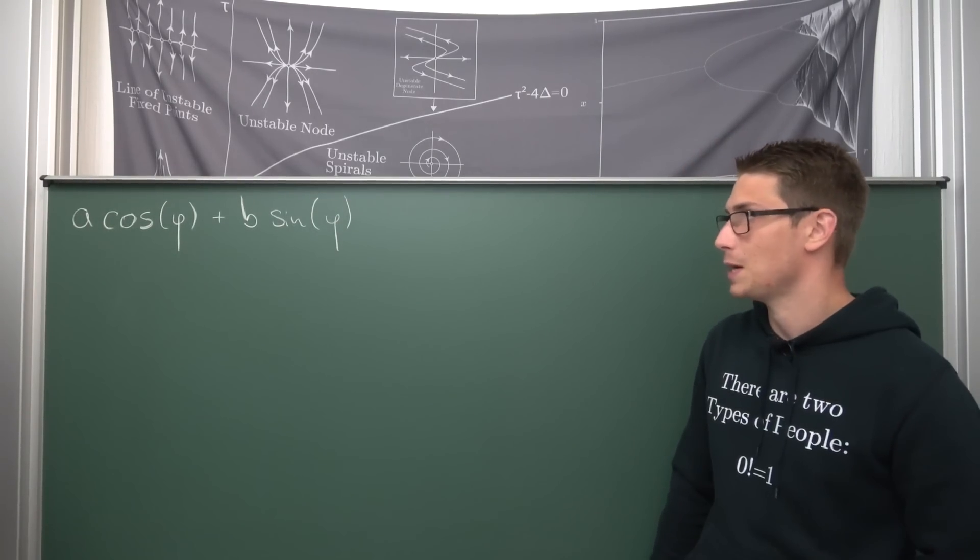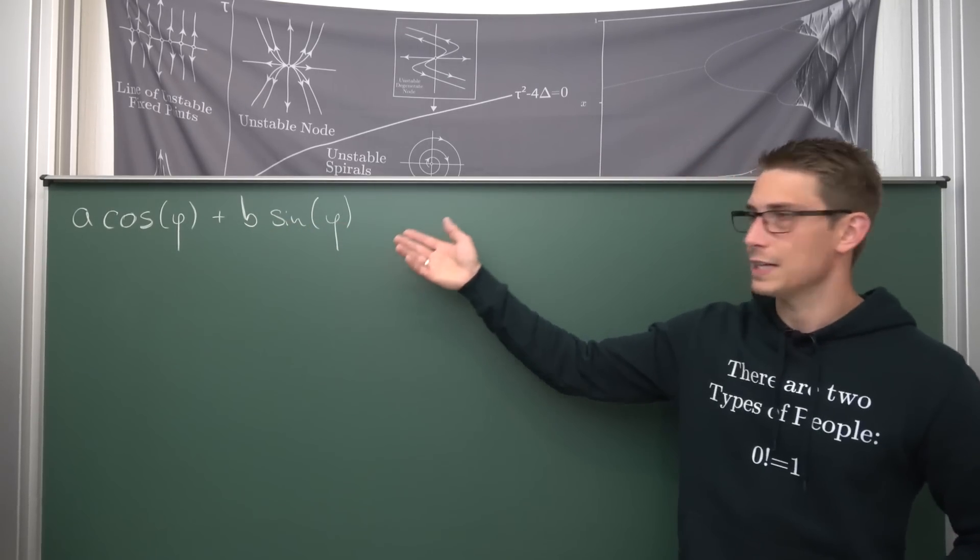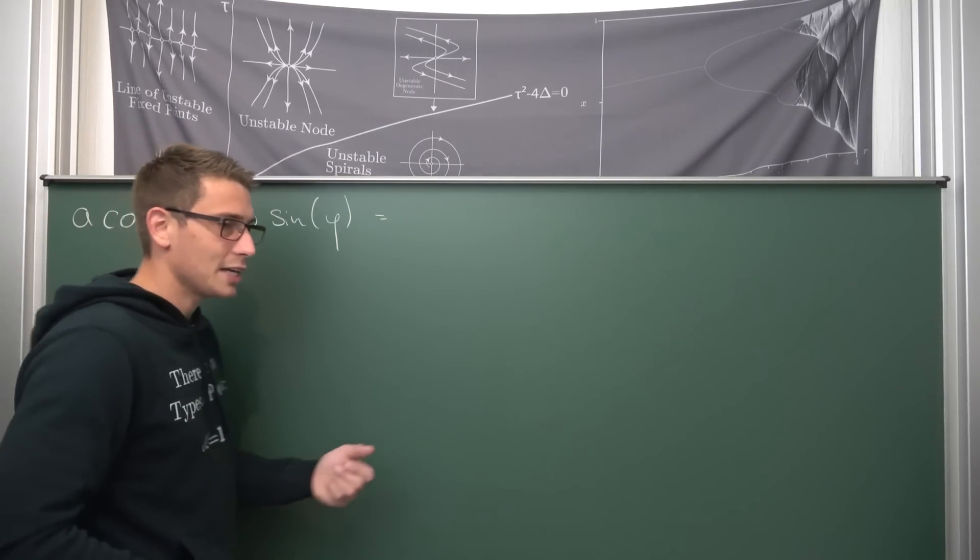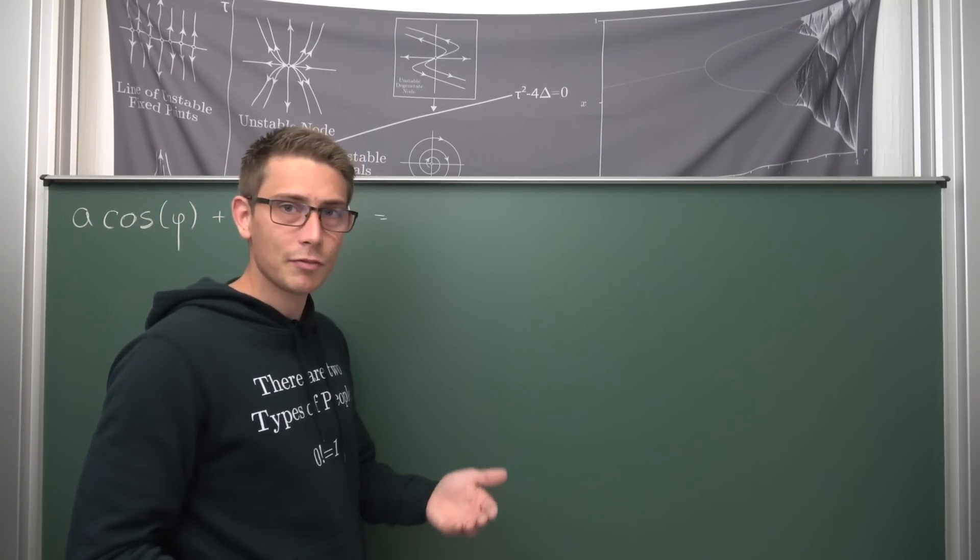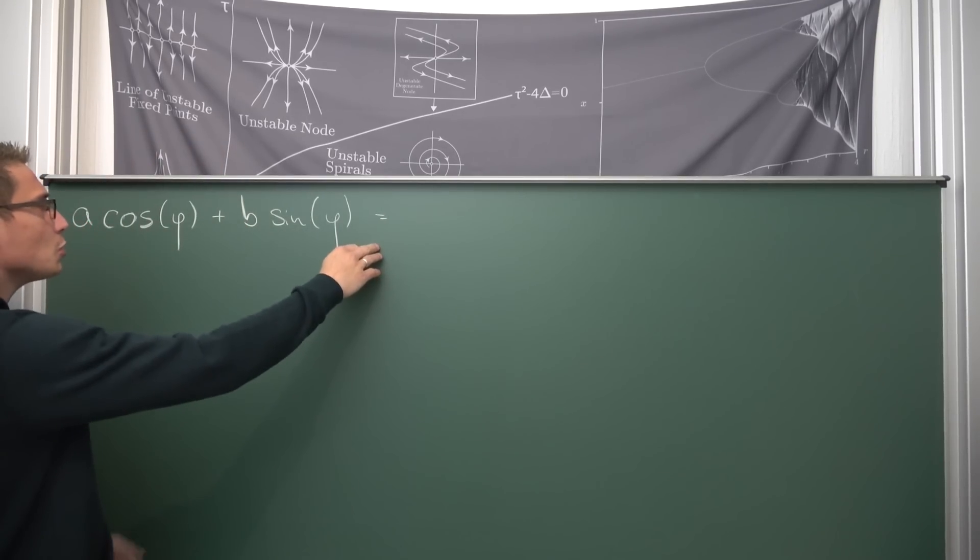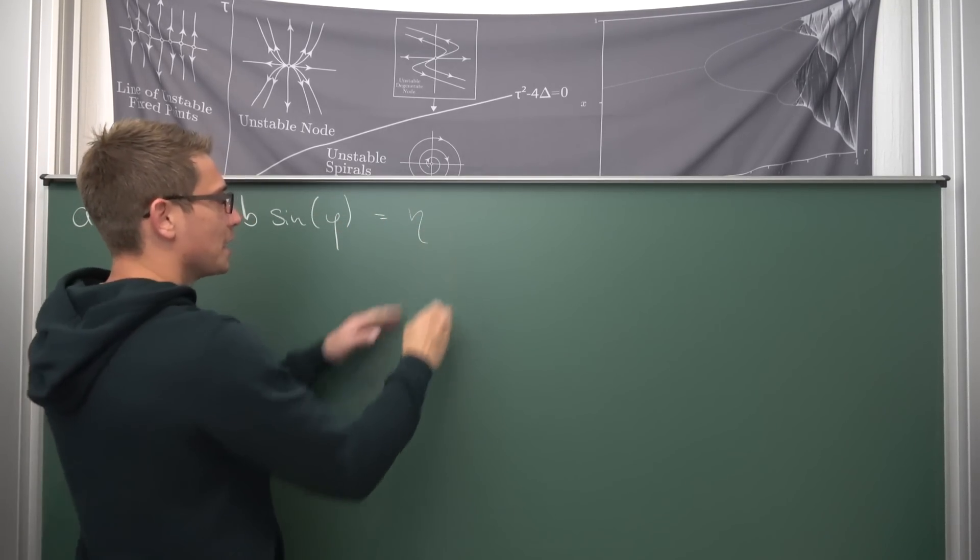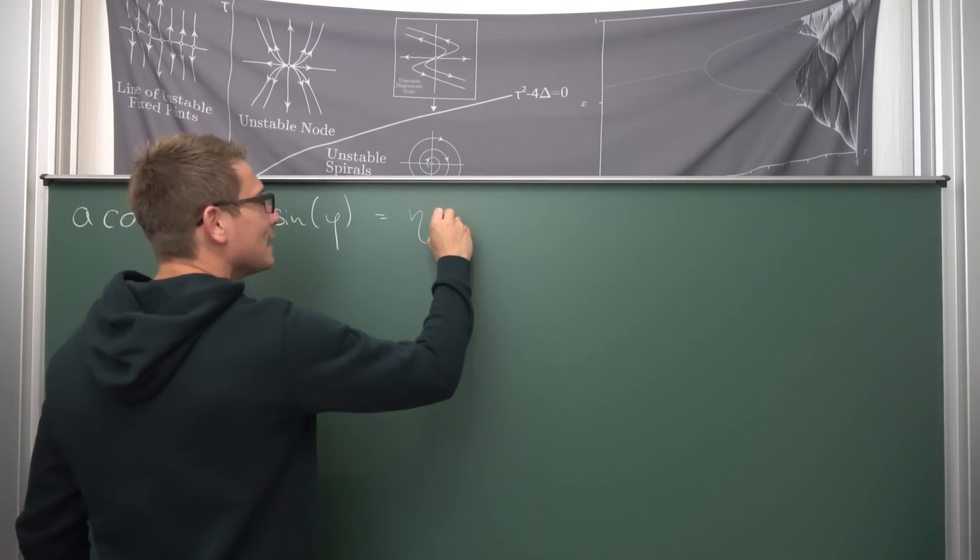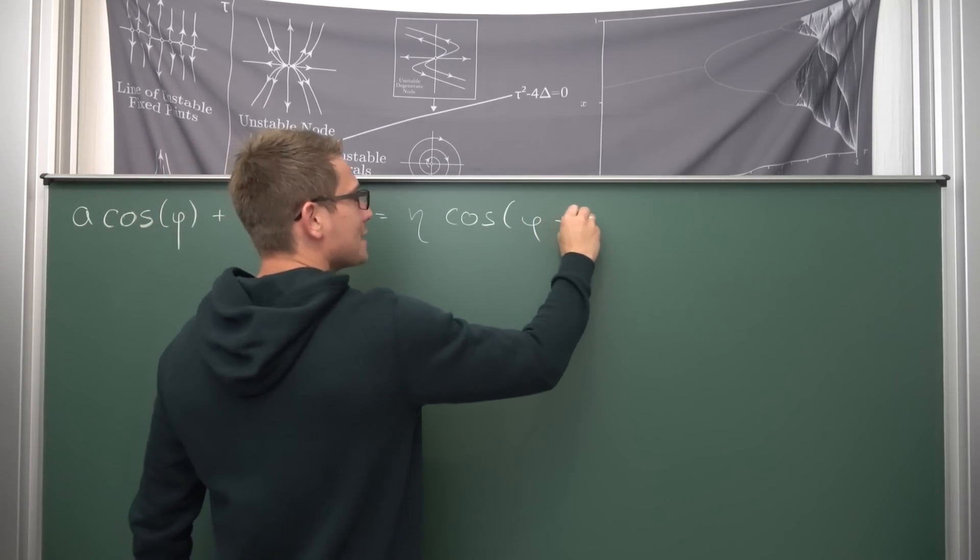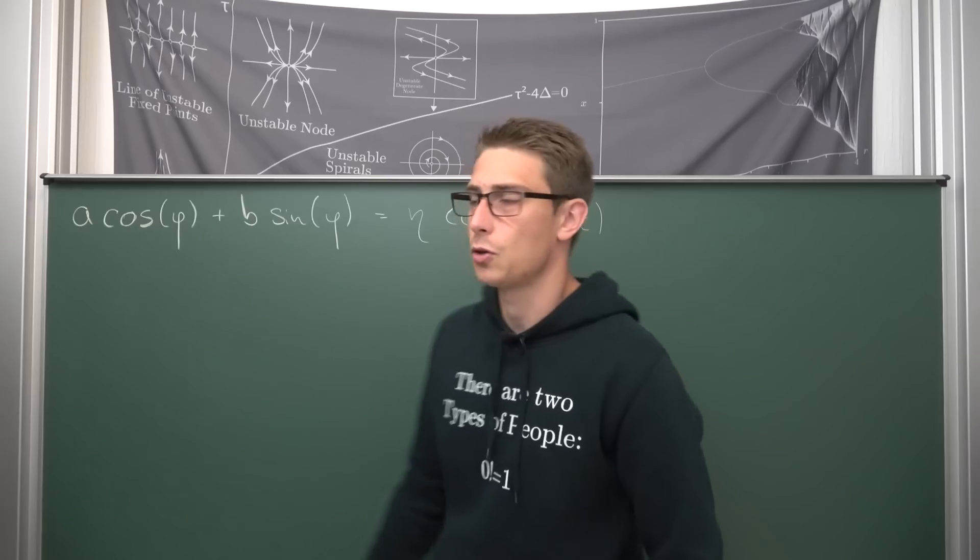But today we are going to show that we can express each and every addition of sines and cosines as some kind of cosine or sine wave with a different coefficient and a so-called phase shift. Namely, we are going to show that we can express a sum like this, as some eta, which is the amplitude you could say, times the cosine of our angle phi that we got right here, plus some initial displacement, t or phi naught, or whatever you want to call it.